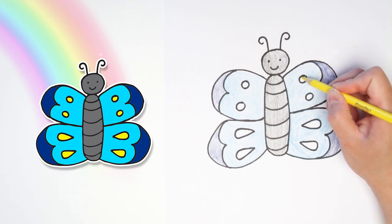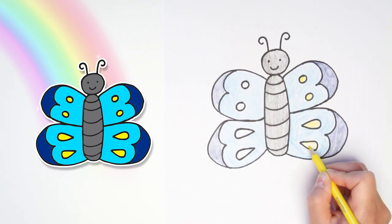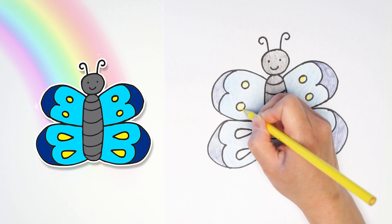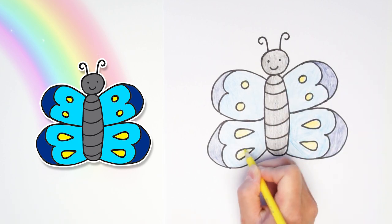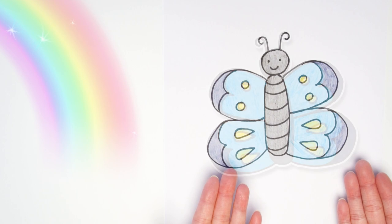We're almost done coloring. I'm just going to finish up with this bright yellow color inside the dots and teardrops. And look at that. We're all done. What a beautiful butterfly.